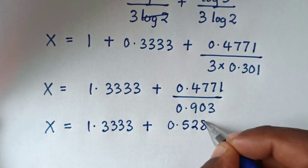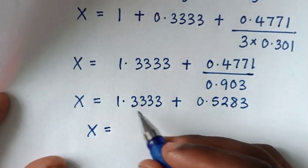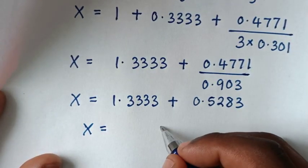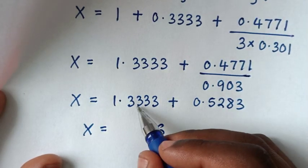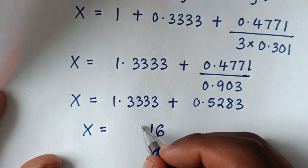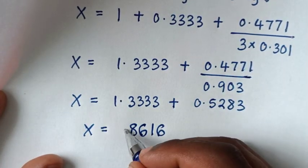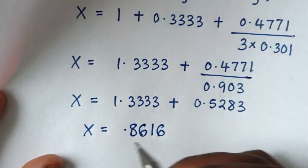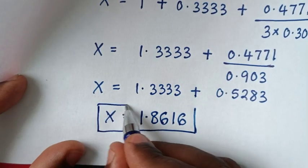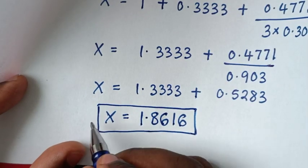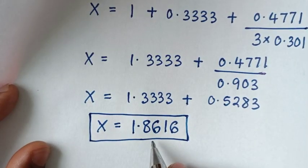Now x equals 1.3333 plus 0.5283. Adding these: 3 plus 3 is 6, 3 plus 8 is 11 carry 1, 3 plus 2 plus 1 is 6, 3 plus 5 is 8, and 1 plus 0 is 1. So the final answer is x equals 1.8616.